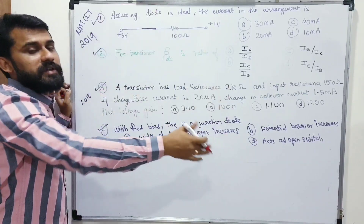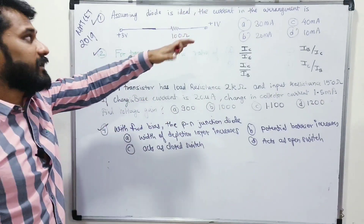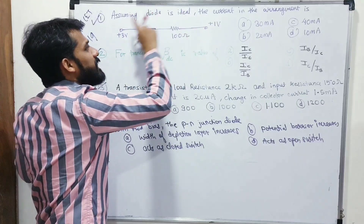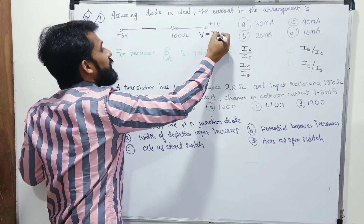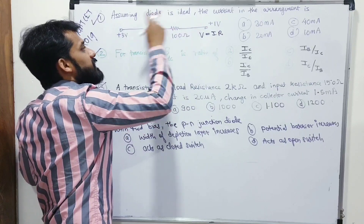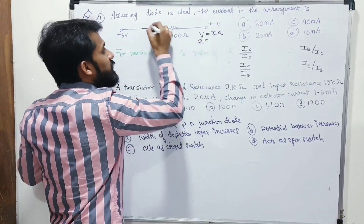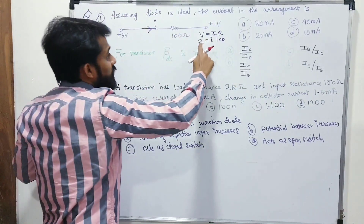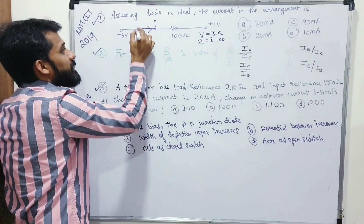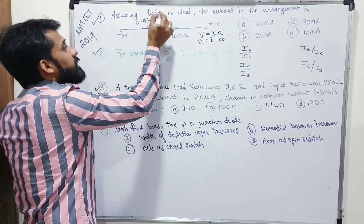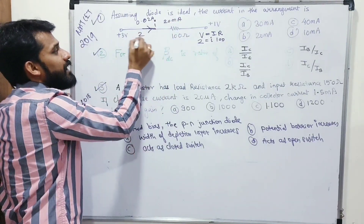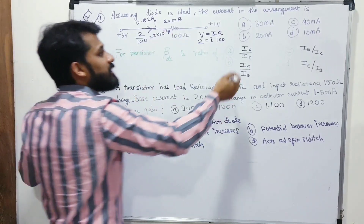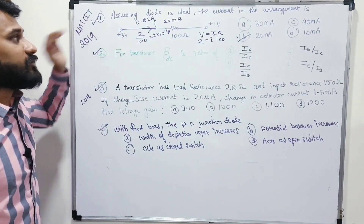Since the diode is ideal and forward biased, it acts as a closed switch with no voltage drop across it. Using V = IR with the full 2V applied across the 100Ω resistor: I = V/R = 2/100 = 0.02 A = 20 milliamperes. The answer to the first question is 20 mA.